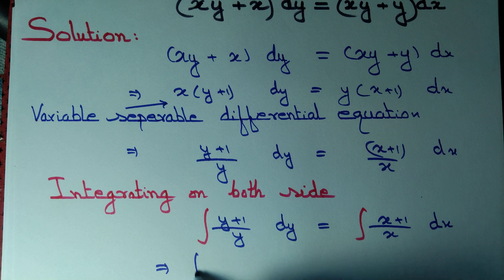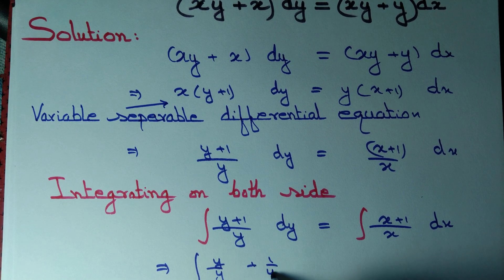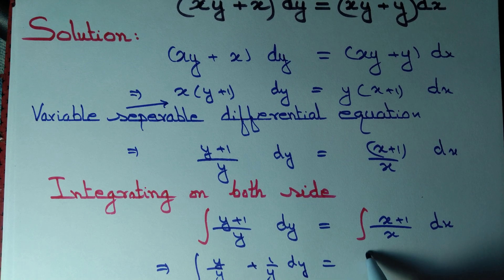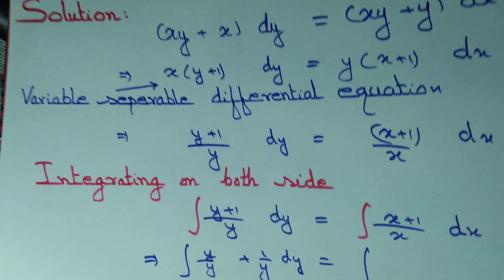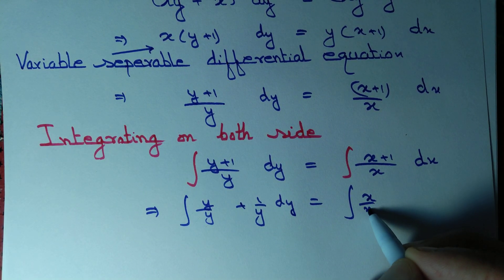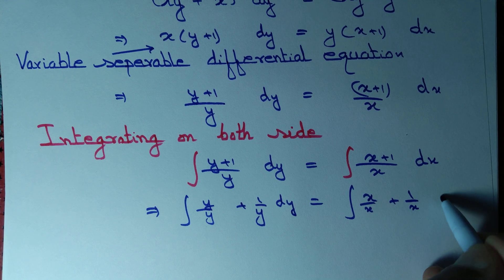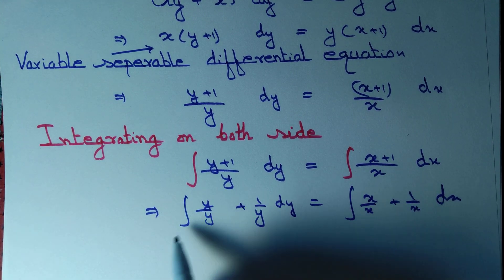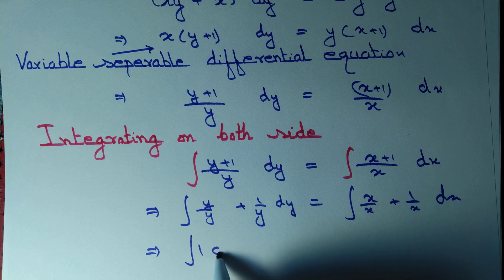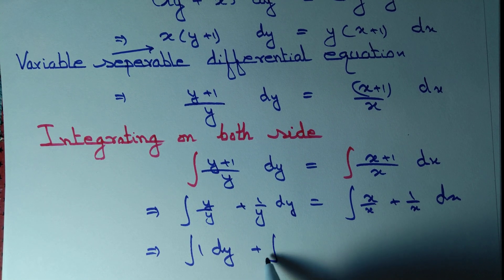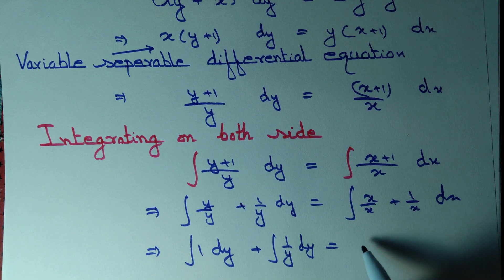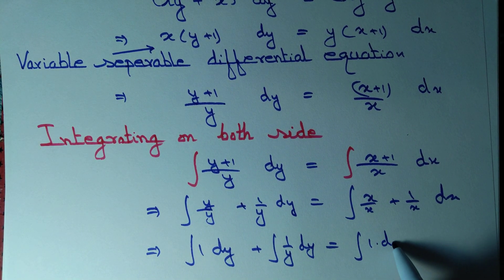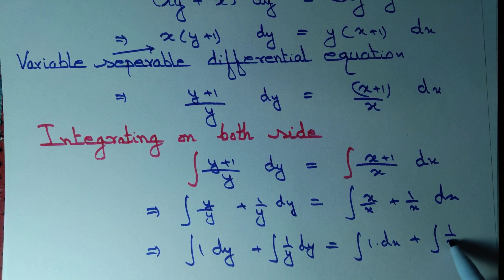We can split (y + 1)/y as y/y plus 1/y, and similarly (x + 1)/x as x/x plus 1/x. So y and y get cancelled, giving integral of 1 dy plus integral of 1/y dy. And x and x get cancelled, giving integral of 1 dx plus integral of 1/x dx.